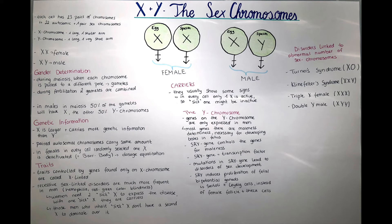In males, in the meiosis, 50% of the gametes will have an X and the other 50% will have a Y, while in females, all the gametes will have an X chromosome.